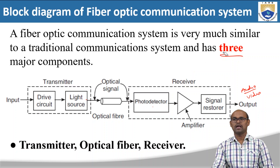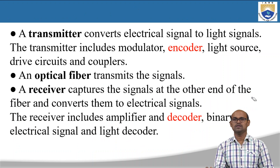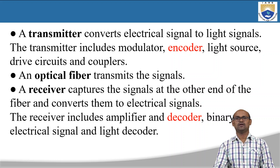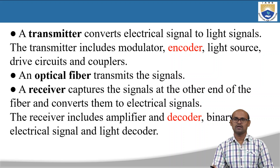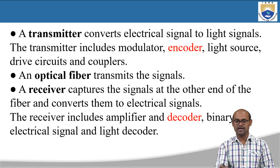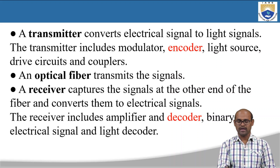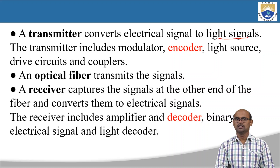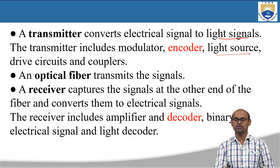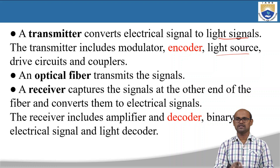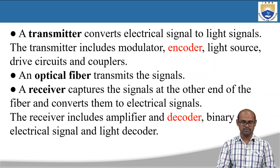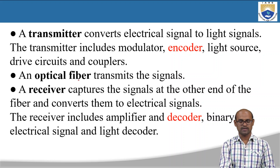A transmitter converts electrical signals to light signals. The transmitter includes a modulator, encoder, light source, and drive circuits. The main function of the transmitter is to convert audio or electrical signals into light signals. The light source converts the electrical signal into a light signal. There is also an encoder that encodes the signal, which is then converted into a light signal using all the components in the transmitter. The optical fiber then transmits the signal.